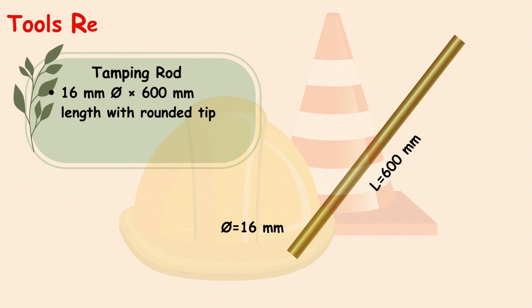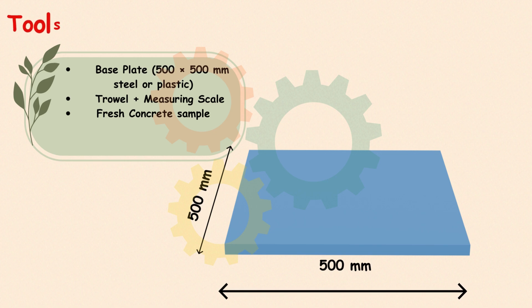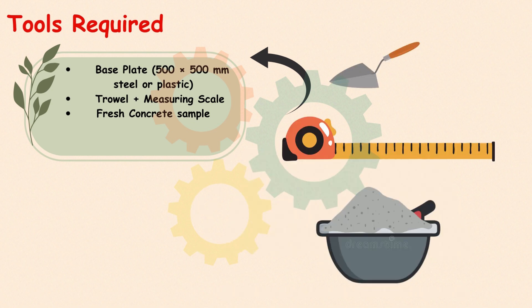A tamping rod, 16mm in diameter and 600mm long, with one rounded end. A base plate, at least 500x500mm, preferably made of steel or plastic. A trowel and a measuring scale or ruler. And of course, freshly mixed concrete.